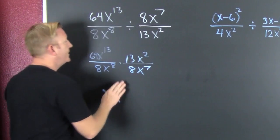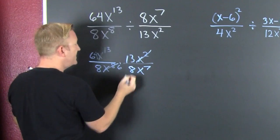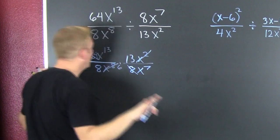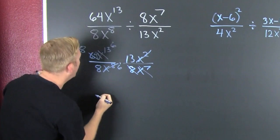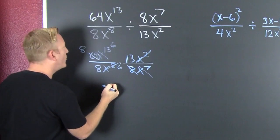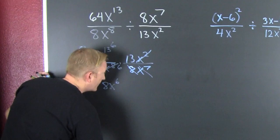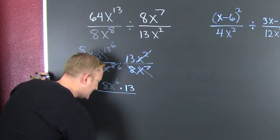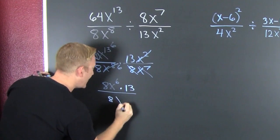You're a 6, and you're an 8. That's a 6. The 8 and the 8 reduce. Whatever's left over — this is 8x to the 6 times 13, and then that's all over. There's an 8. What else is left? 6. So that's x to the 6.